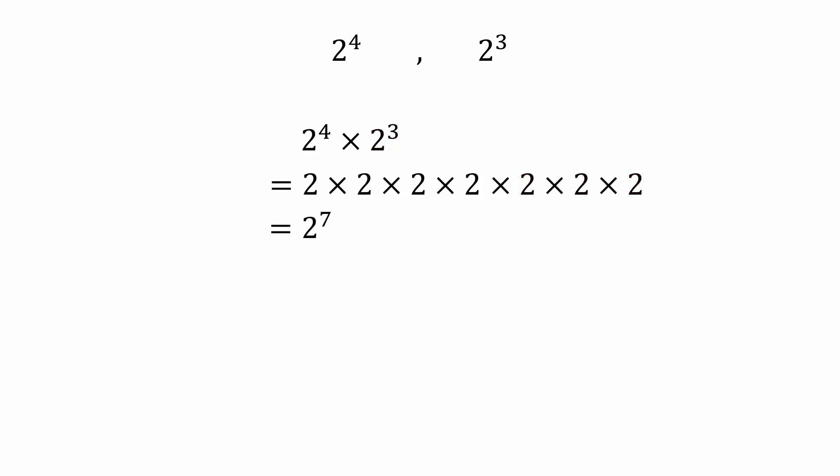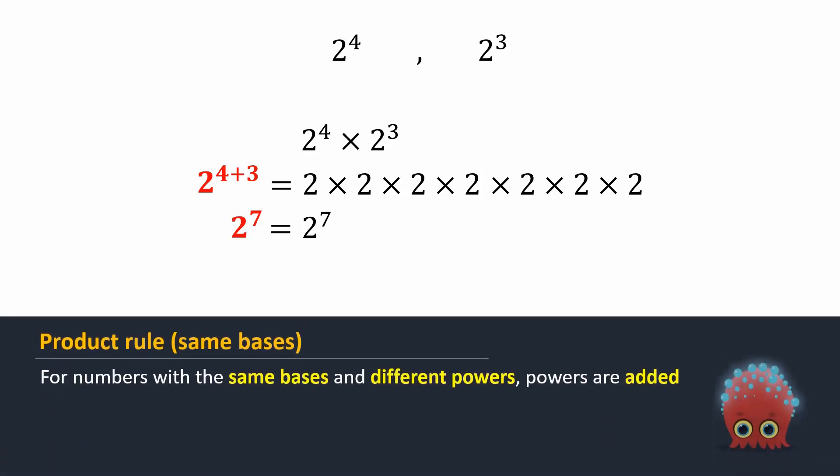Notice that the same result can be obtained by writing the base once and adding the powers. Here, 4 and 3 add up to make 7. This is called the exponents product rule.